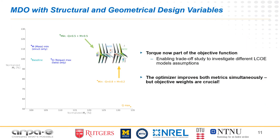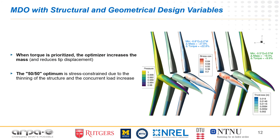Finally, we include both structural and geometrical design variables in the optimization formulation and consider a linear combination of torque and mass in the objective function. This approach enables engineers to explore different design trade-offs that might depend on technological and economical considerations in cost of energy models. The impact of the objective coefficients on the final design has an intuitive explanation. If mass has a small or zero weight in the objective, the optimizer will prioritize aerodynamic efficiency and torque maximization, which might result in additional mass on the final rotor to ensure structural feasibility under heavier loads. Conversely, when torque and mass are equally weighted, the optimizer is able to simultaneously improve the aerodynamic performance of the rotor and reduce its total mass.